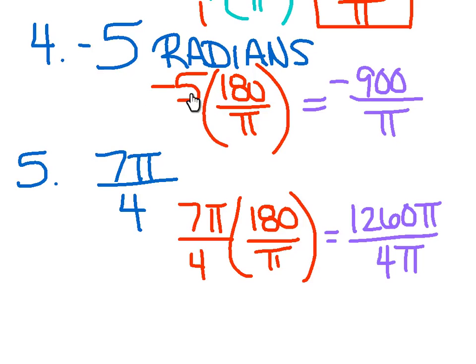All right, so again, I was given radians. I want degrees, so the degree goes on top. 180 over pi. Multiply across, I'll put it as a fraction if that helps. Multiply across the top. Negative 5 times 180 is negative 900. All over pi.